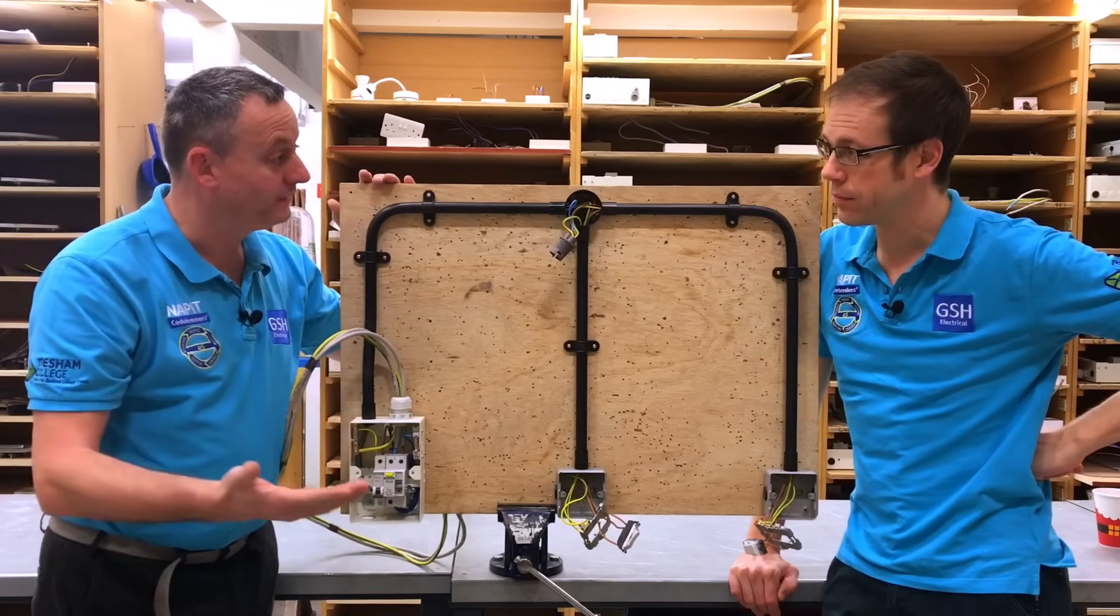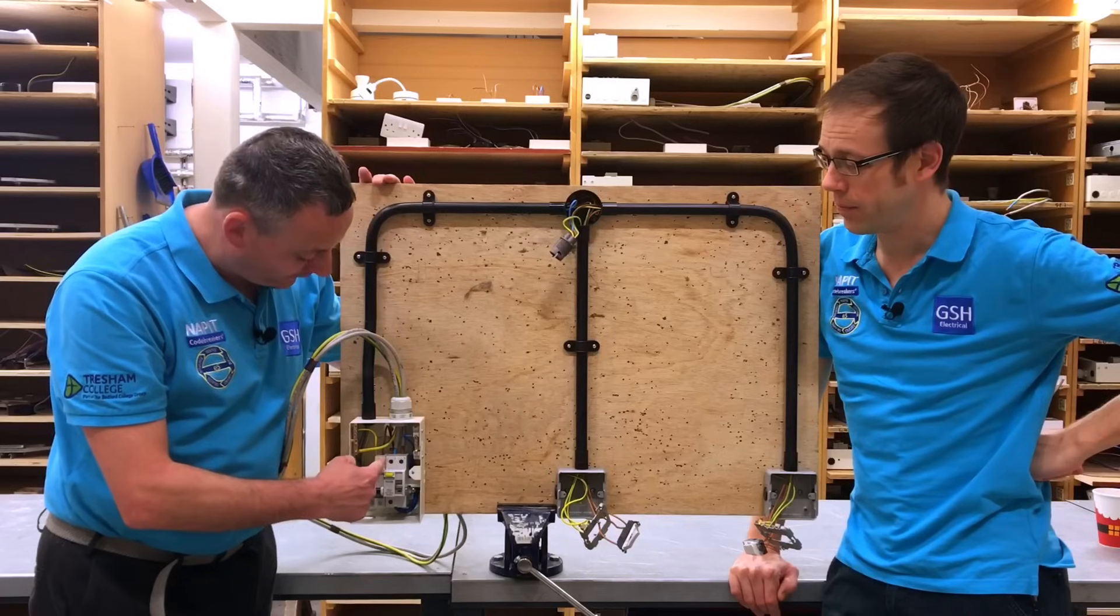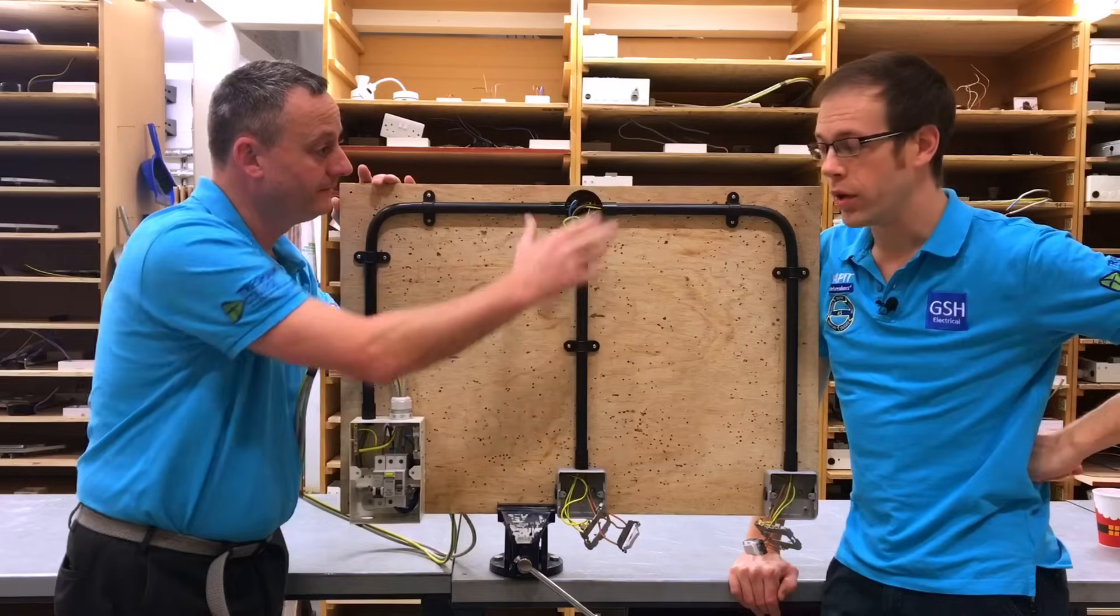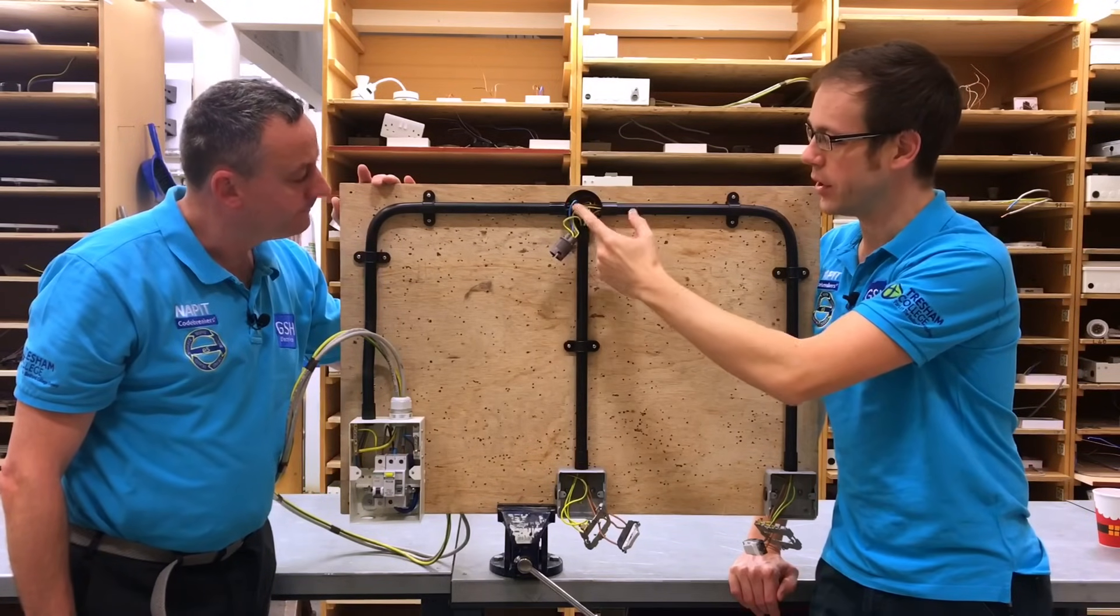If we start off mapping through the line conductor which starts at the top of the MCB, the line conductor doesn't end up going straight to the lamp itself. We don't take a permanent life to the lamp - in most cases there's no connection in here for that.